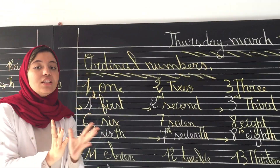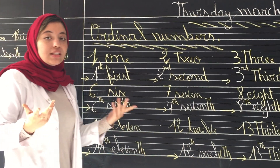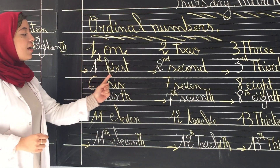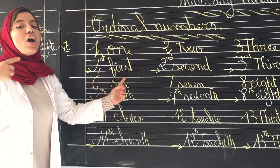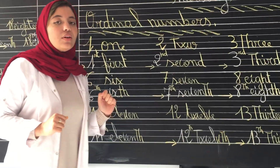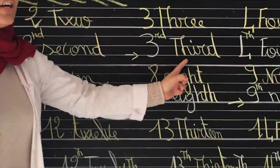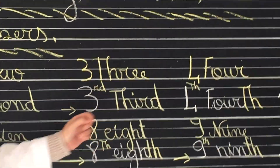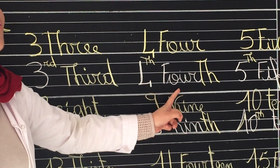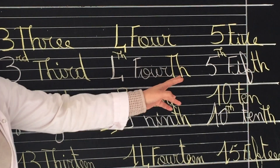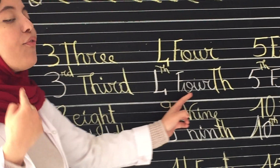Each number has an ordinal number. Let's start with the number 1 — what is the ordinal of 1? It's first. Repeat: first. Good. What about 2? It is second. 3 becomes third. 4 — 4th. Pay attention here, it ends with 'th', and we pronounce it 4th.